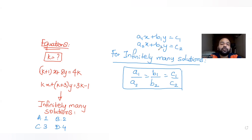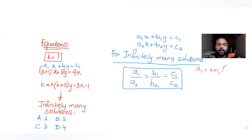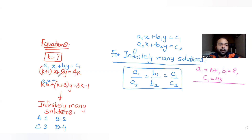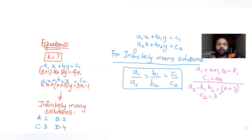Comparing the first linear equation with a1·x + b1·y = c1, I get a1 = k+1, b1 = 8, and c1 = 4k. Comparing the second equation with a2·x + b2·y = c2, I get a2 = k, b2 = k+3, and c2 = 3k − 1.